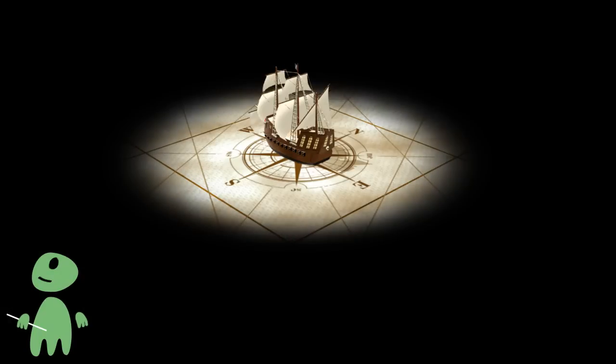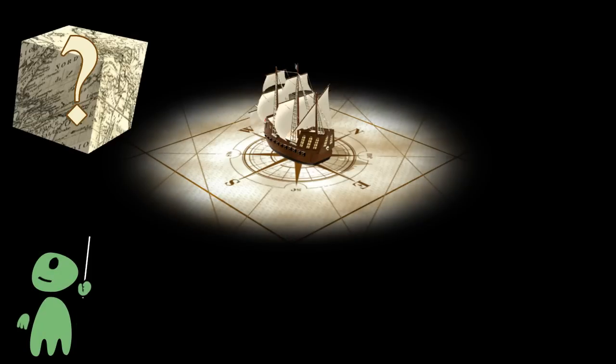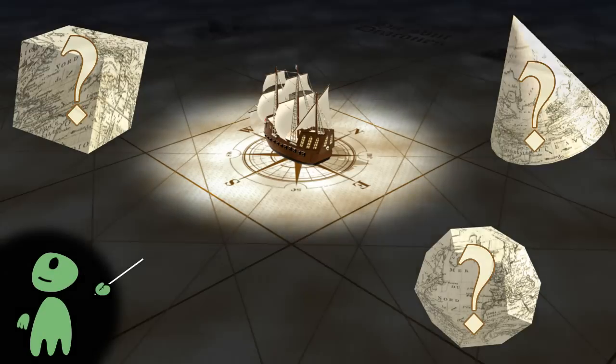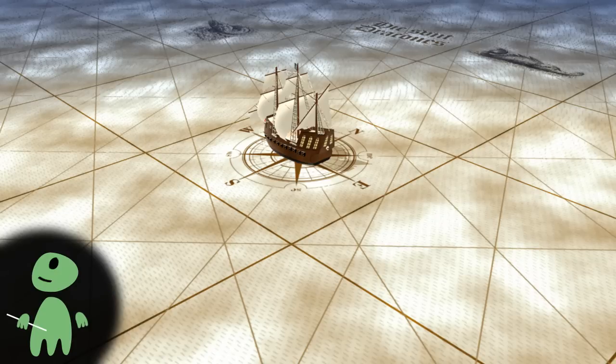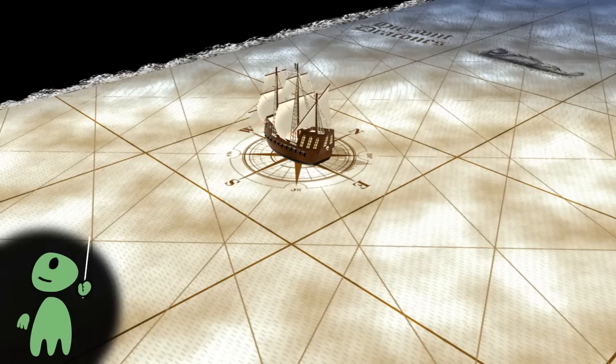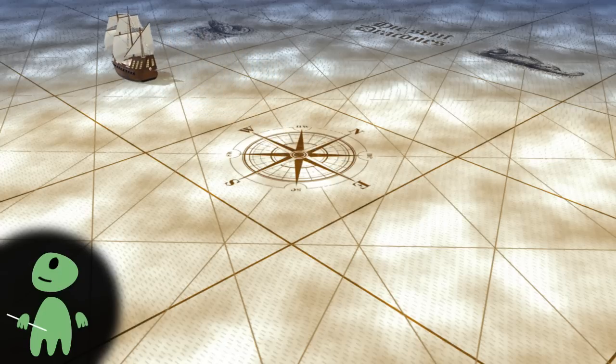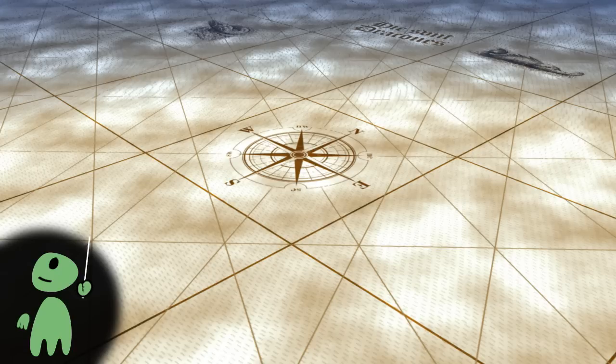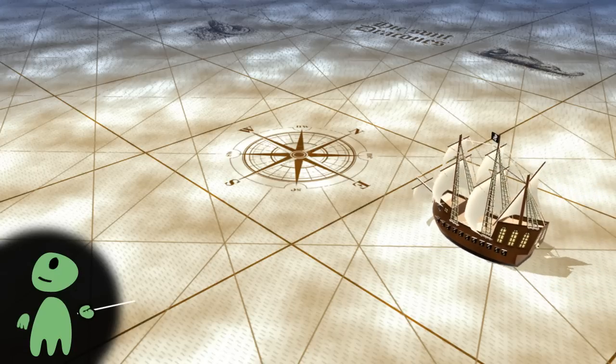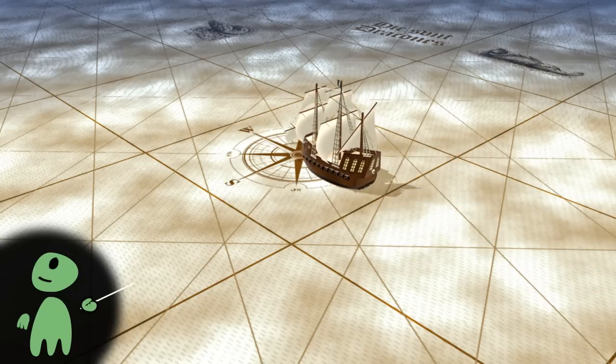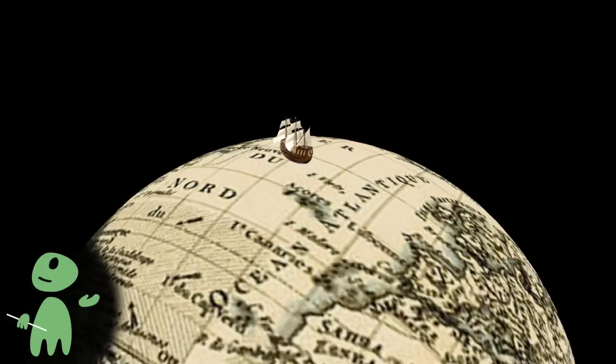Like many alien races, Earthlings have gone through a stage in history when they wondered about the shape of their planet's surface. Some imagined an infinite surface, whereas others believed the surface had an edge. Eventually they found out that both were wrong. There is no edge, but the surface is finite. When you sail away into one direction and keep sailing in a straight line, you will eventually come back to where you came from. The reason is, of course, that Earth is a sphere.